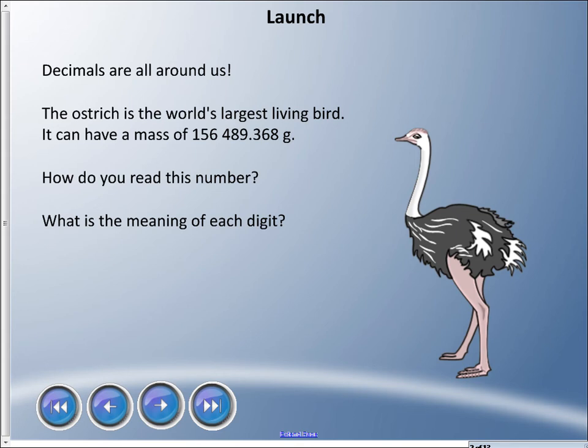Math is all around us. The ostrich is the world's largest living bird — you might know that — and it can have a mass shown as a really large number with a gram sign. How do you read that number, and what is the meaning of each of those digits? That's what we're going to be looking at in this lesson.